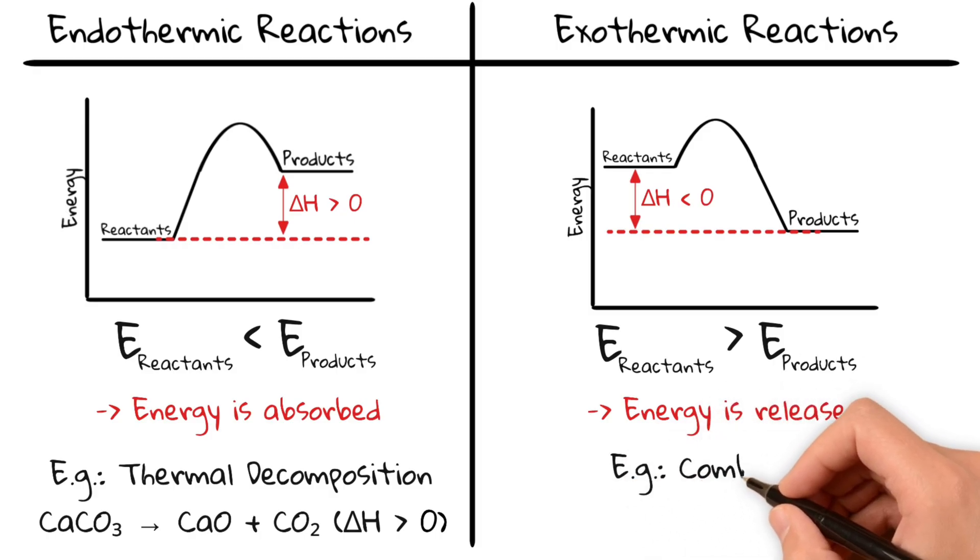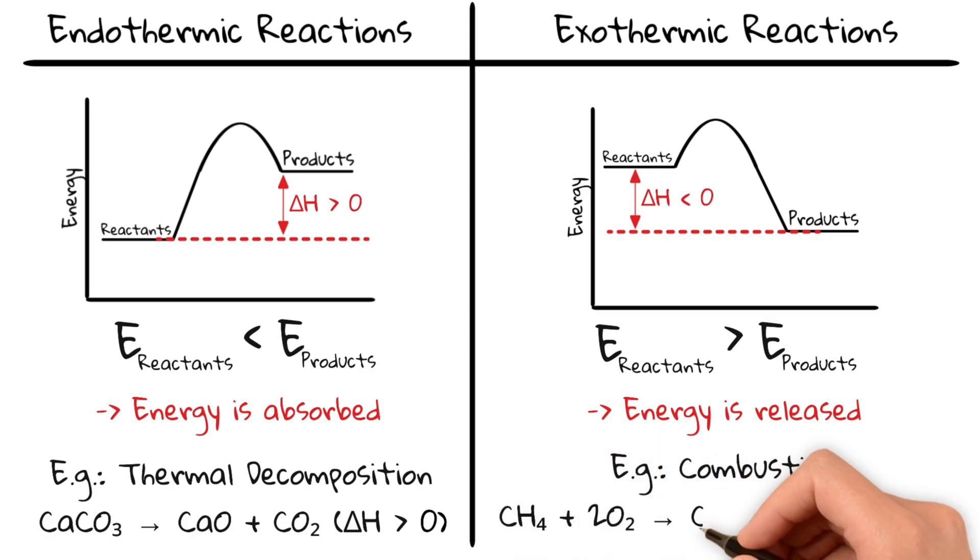A common example is the combustion of methane. Methane and oxygen react to form carbon dioxide and water. As the overall energy change is negative, energy is released into the surroundings as a flame.